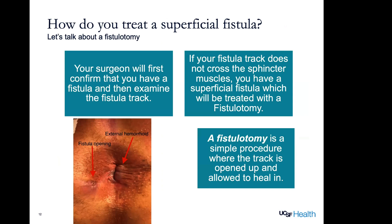How do you treat a superficial fistula? First, your surgeon is going to take you in for the exam under anesthesia, examine your fistula track, and evaluate whether it crosses or doesn't cross the sphincter muscles. If the fistula track does not cross the sphincter muscles, you have a superficial fistula, which can be treated with a fistulotomy. In this picture you can see that fistula opening tracking back into the anal canal — that's the area that's going to be opened up. A fistulotomy is a simple procedure where the track is opened up and allowed to heal back in — the surgeon flays open the skin to expose the entire track, leaving you with a superficial wound bed that will heal over time.